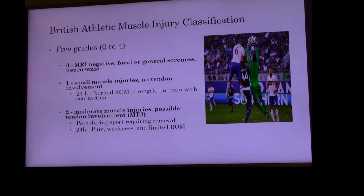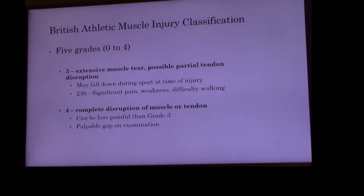Grade one would be small muscle injuries with no tendon involvement. At 24 hours they'd have normal range of motion and strength, but pain with contraction. Grade two would be moderate muscle injuries with possible tendon involvement, specifically the myotendinous junction — presenting with pain during sport requiring removal, and at 24 hours pain, weakness, and limited range of motion. Grade three would be extensive muscle tearing with possible partial tendon disruption; they might fall down during play and have a limp, crutches, and significant pain and weakness.